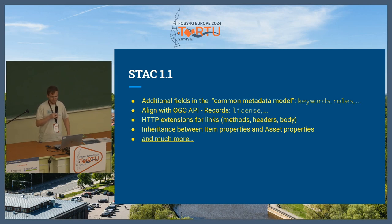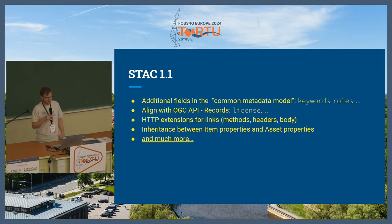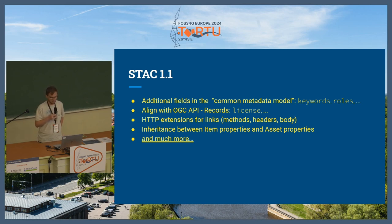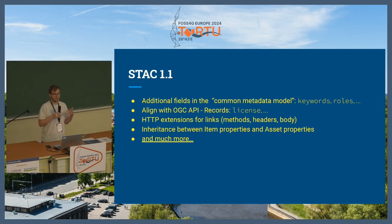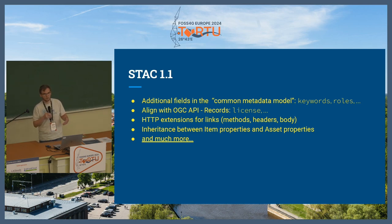The roles have been made more generic — before they were only in assets, now you can assign more roles to links so that you can clearly identify what purpose they have. There was an effort to align further with OGC API Records, which led to a change in the license field. The actual change is that beforehand there were two values in addition to SPDX license identifiers — 'proprietary' and 'various'. 'Proprietary' was not well received in the community because even for open data you had to use it if there was no SPDX license identifier, giving a wrong impression. So now everything just uses 'other' and you put a link to your license information.